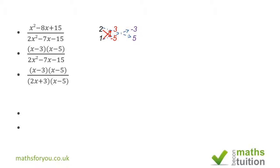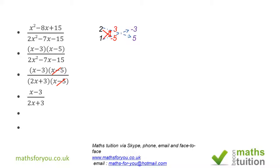We now have (x-3)(x-5) divided by (2x+3)(x-5). The (x-5) factors are common to both the numerator and the denominator, and they cancel out. We end up finally with (x-3) divided by (2x+3), and we can't simplify this fraction any further. That is our answer. Thank you for watching and I'll see you again sometime — please subscribe, bye bye.